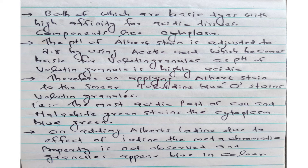On applying Albert stain to the smear, Toluidine blue O stains the volutine granules — that is the most acidic part of the cell — and malachite green stains the cytoplasm blue-green. On adding Albert's iodine, due to the effect of iodine, the metachromatic property is not observed and the granules appear blue in color.